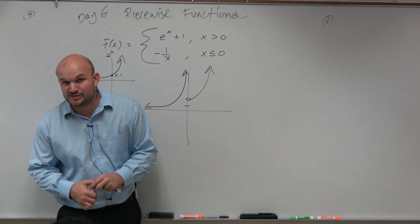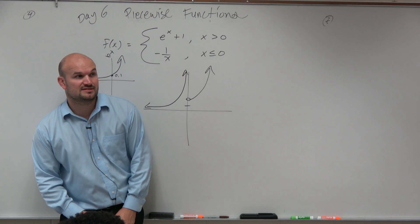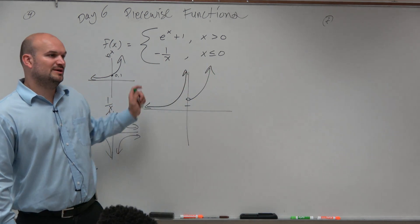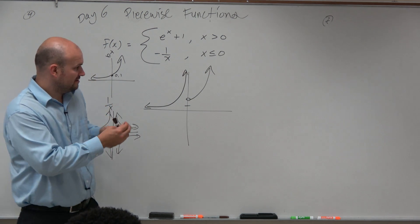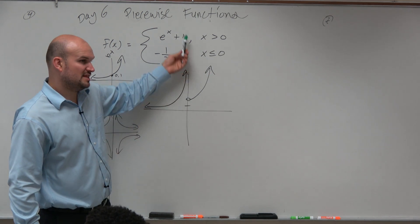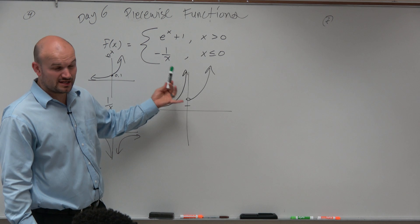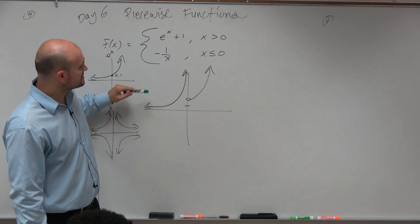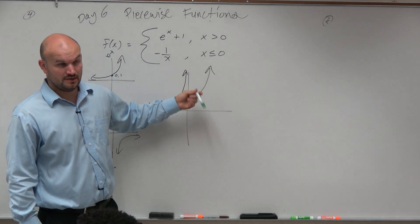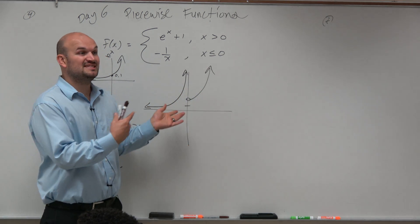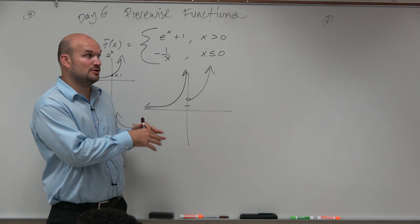But now we have a little bit of an issue because in the previous graph, could we draw that without lifting up our pencil? Right. Now, here, this graph goes to that asymptote and then this is the hole. We can't draw this graph unless we jump from one function to the next. Do you guys agree? So that's important because we have discontinuities, which I'm about to go over here in just a second.